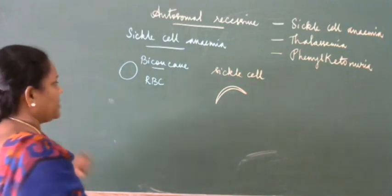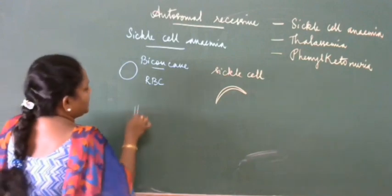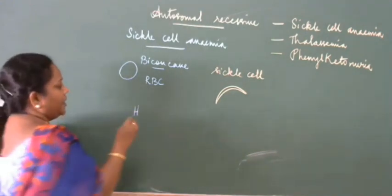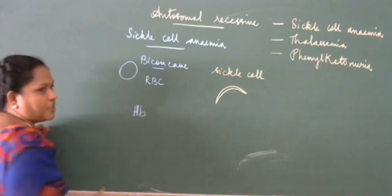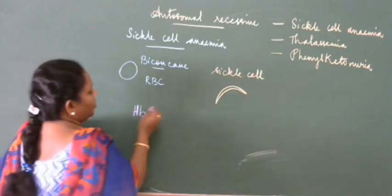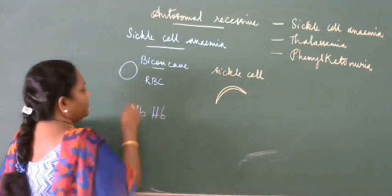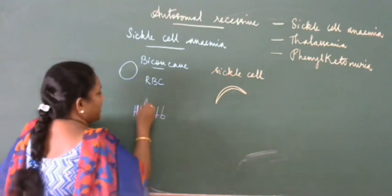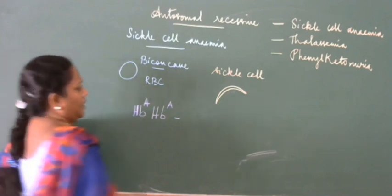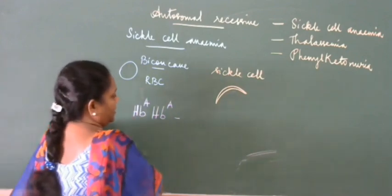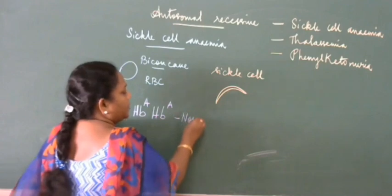The gene responsible for producing hemoglobin is represented as HB. Hemoglobin is normally mentioned as HbA. If the allele is normal — if the gene is normal — then the type of hemoglobin produced is normal hemoglobin.